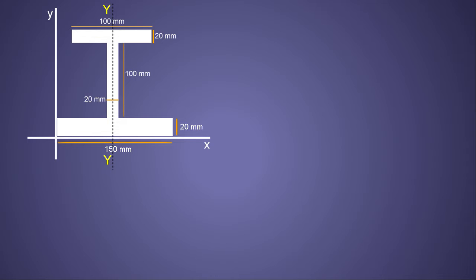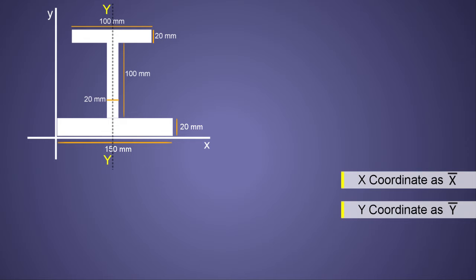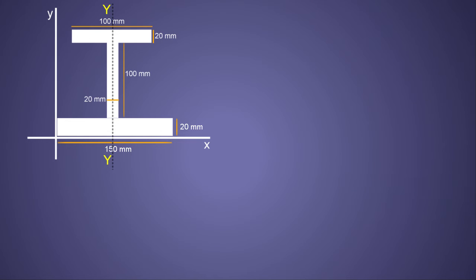Whenever there is a symmetrical axis, the centroid will lie on this axis, and that saves a lot of time in calculations. So always look out for symmetrical axes. Finding the centroid means finding the x and y coordinates, denoted x-bar and y-bar. Since there is a symmetrical axis in the Y direction, we need not find x-bar, because the centroid lies on the YY axis.